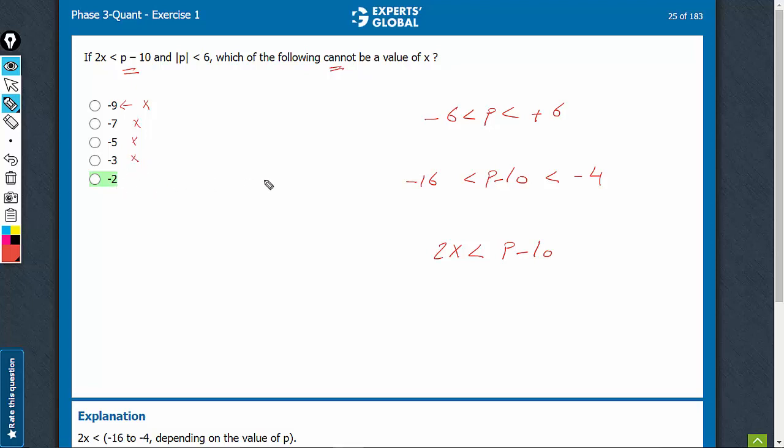Double minus 2, it becomes minus 4. See, p minus 10 is already less than minus 4, and 2x is further smaller than p minus 10. If p minus 10 is less than minus 4, then 2x is also less than minus 4, and therefore x is definitely less than minus 2. x cannot be equal to minus 2. Minus 2 cannot be a value of x, and this is the right answer.